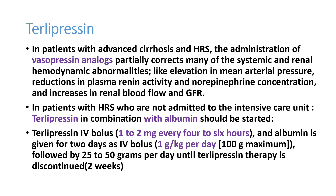Once hepatorenal syndrome is diagnosed, the definitive treatment is liver transplant. As bridge therapy, the most important drug is a vasopressin analog — terlipressin — which partially corrects systemic and renal hemodynamic abnormalities, elevating mean arterial pressure, reducing plasma renin activity and norepinephrine concentration, and increasing renal blood flow. Terlipressin is given at 1–2 mg every 4–6 hours IV bolus, combined with albumin 1 g/kg/day (maximum 100 g), followed by 25–50 g/day until terlipressin therapy is discontinued, for up to approximately two weeks.